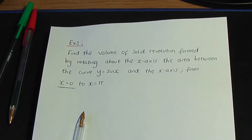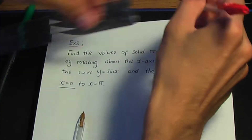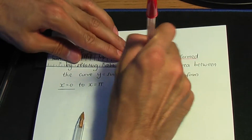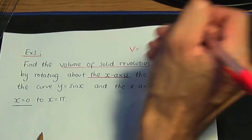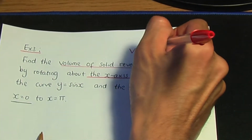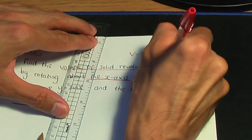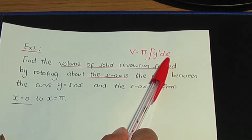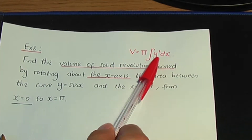Back to the paper and pen. So here's an example: find the volume of a solid of revolution formed by rotating about the x-axis. Remember the formula — about the x-axis, V equals pi into the integral of y squared dx. About the y-axis, it's pi into the integral of x squared dy.